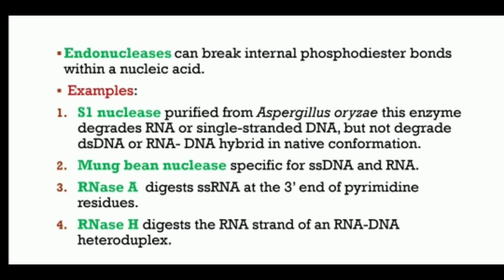Another example is mung bean nuclease, which is specific for single-stranded DNA and RNA; it is purified from mung bean sprouts. RNase is an endonuclease which digests single-stranded RNA at the 3-prime end of pyrimidine residues. RNase H is an endonuclease which digests the RNA strand of an RNA-DNA heteroduplex; this enzyme does not digest single-stranded or double-stranded DNA.